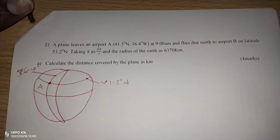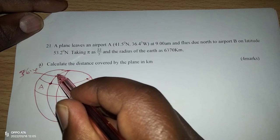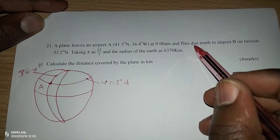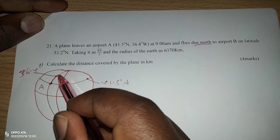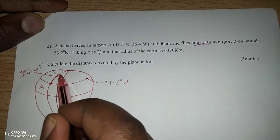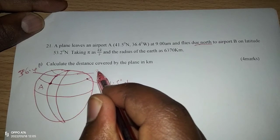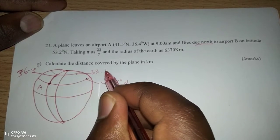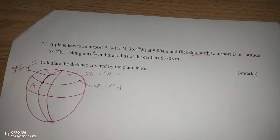That is where the plane starts moving. Then it goes up northwards, so it means because it is flying due north, then it is following this great circle, this longitude, until it reaches latitude 53.2 in the north. We are told now to calculate this distance.